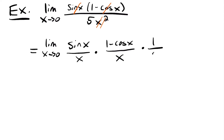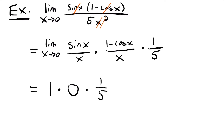The 5 in the denominator becomes a factor of 1/5. To stress what we did: we split the original function into parts that multiply back to the original — sine x over x, times (1 minus cosine x) over x, times 1/5. Now we can see the parts whose limits we know as x approaches 0. So the limit equals 1 times 0 times 1/5, and anything times 0 is 0. Our answer is 0.